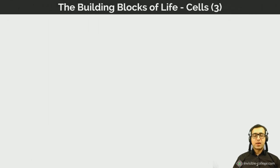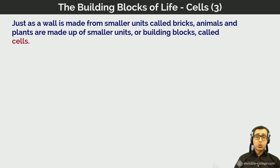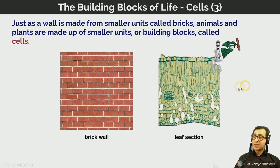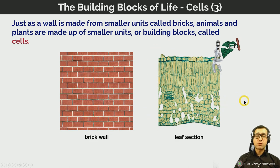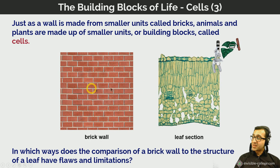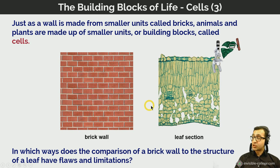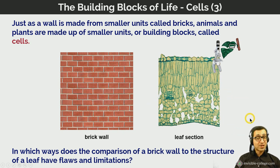Just as a wall is made from smaller units called bricks, living organisms — animals, plants, and others — are made up of smaller units called cells. We can see the cells that compose a transverse section of a leaf as viewed under a microscope. One obvious difference between bricks in a wall and cells in a structure is that bricks are uniform in size and shape, whereas cells, though sharing many characteristics, are non-uniform in their sizes and shapes.